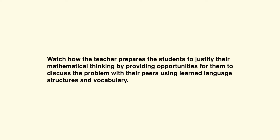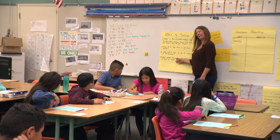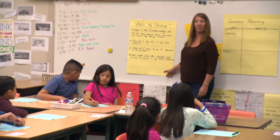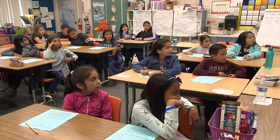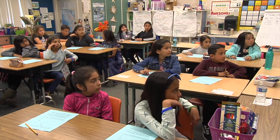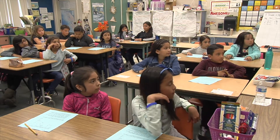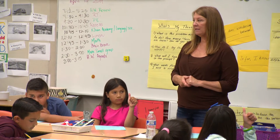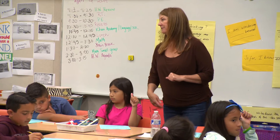Watch how the teacher prepares students to justify their mathematical thinking by providing opportunities to discuss the problem with peers using learned language structures and vocabulary. The teacher says: 'Before we even do the math, we're going to think about it — we're actually going to think about our thinking. Number one: what is the problem asking me to do? How many tasks and asks are there? How do you know?' Ones, please talk to twos. Threes, please talk to fours.